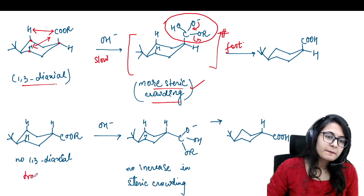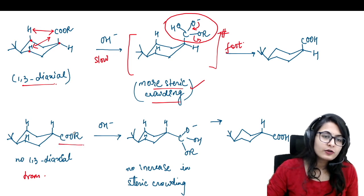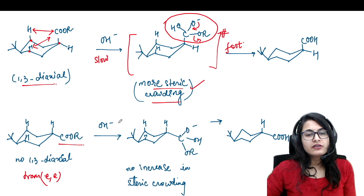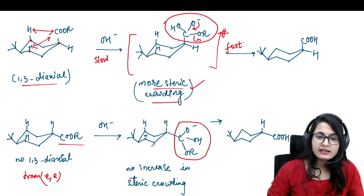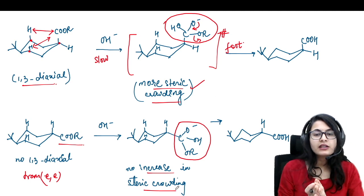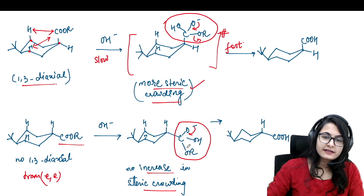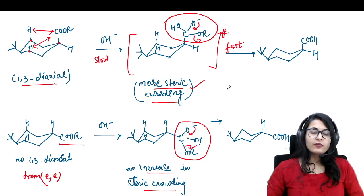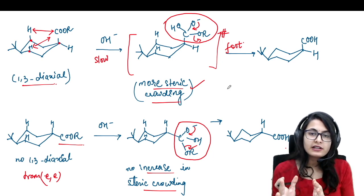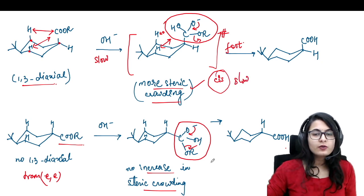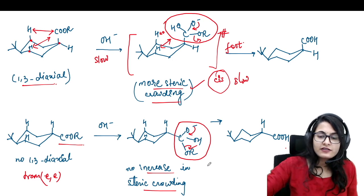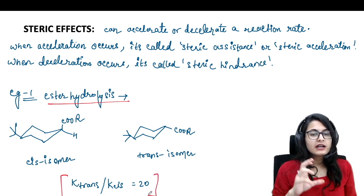What happens in the trans? In the trans compound, the ester group is on the equatorial position because in the trans we can keep both of them equatorial. So when the tetrahedral intermediate forms, it is not doing steric repulsion with any of the groups inside the ring. There is no increase in steric crowding and the molecule can easily go to the acid by removal of this group. So in the cis isomer the tetrahedral intermediate faces a lot of steric repulsion in the transition state — that's why it is slow. No interaction in the trans — so the trans is going to be fast.